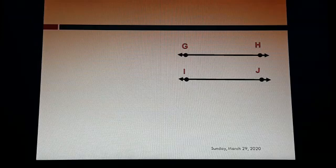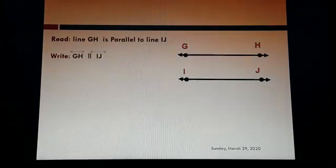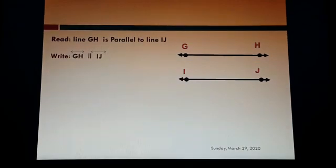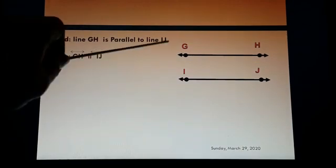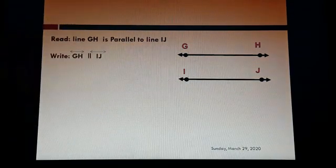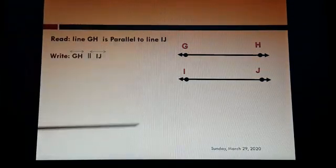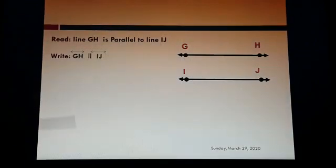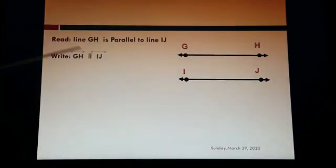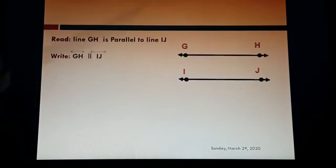Let's do practice. Line GH is parallel to line IJ. How to read: line GH is parallel to line IJ. How to write: just write the lines and in between you put the parallel line symbol.